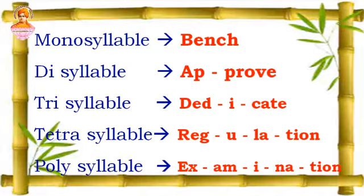Next is disyllable. Disyllable means a word that has two vowel sounds. When I pronounce the word approve, I can hear two vowel sounds — A and O. So it is a disyllable word.